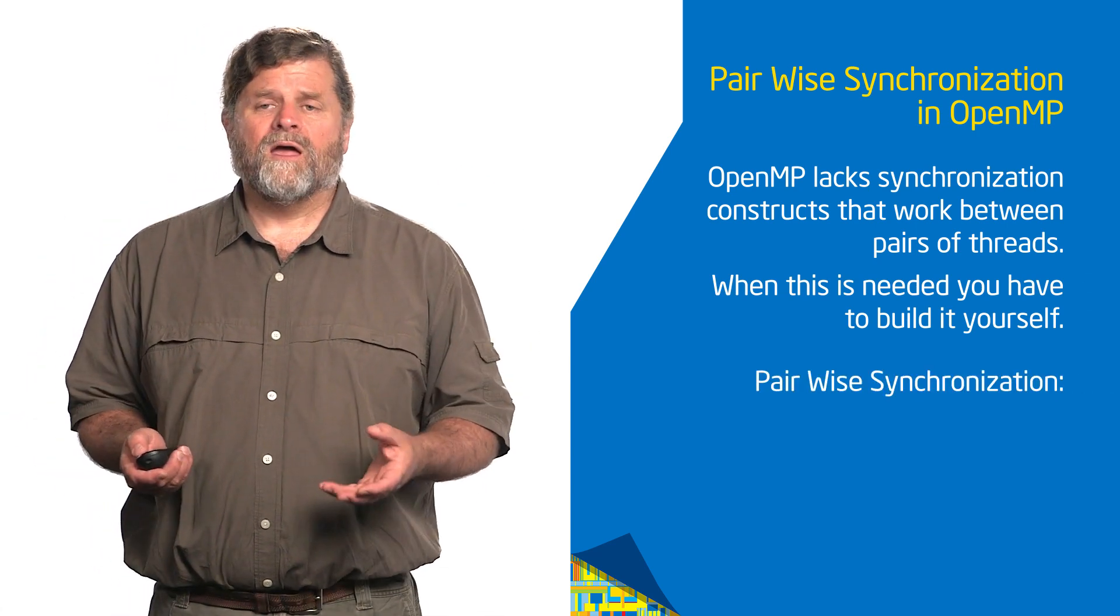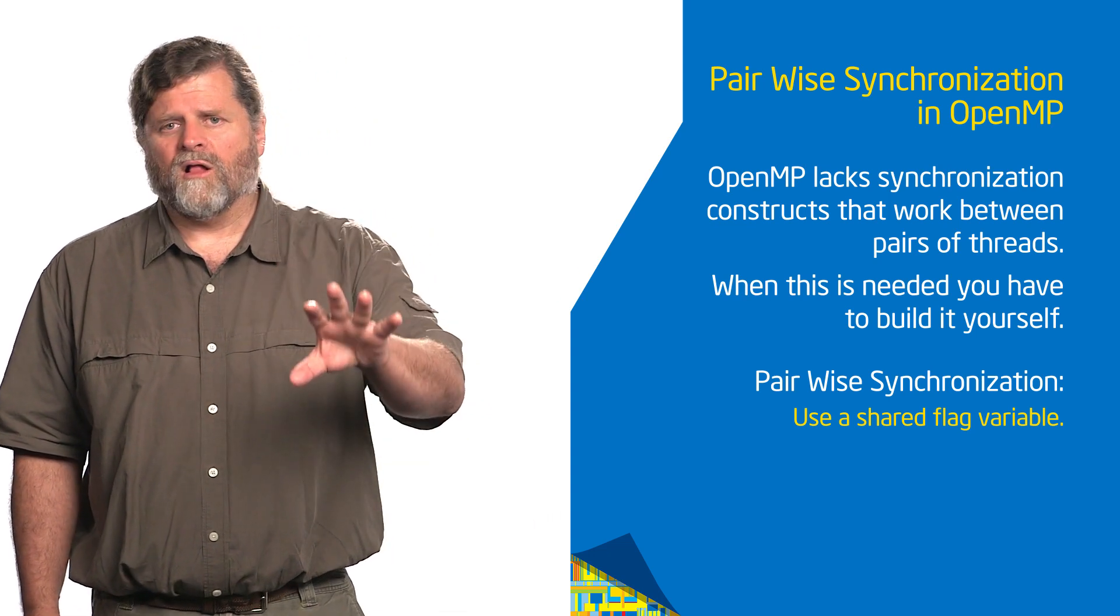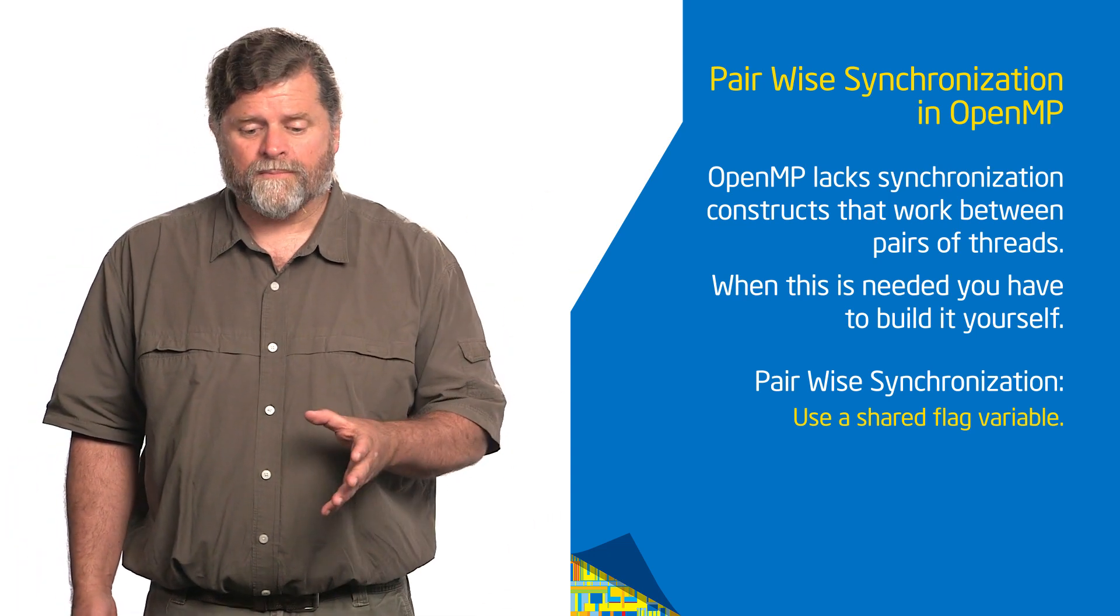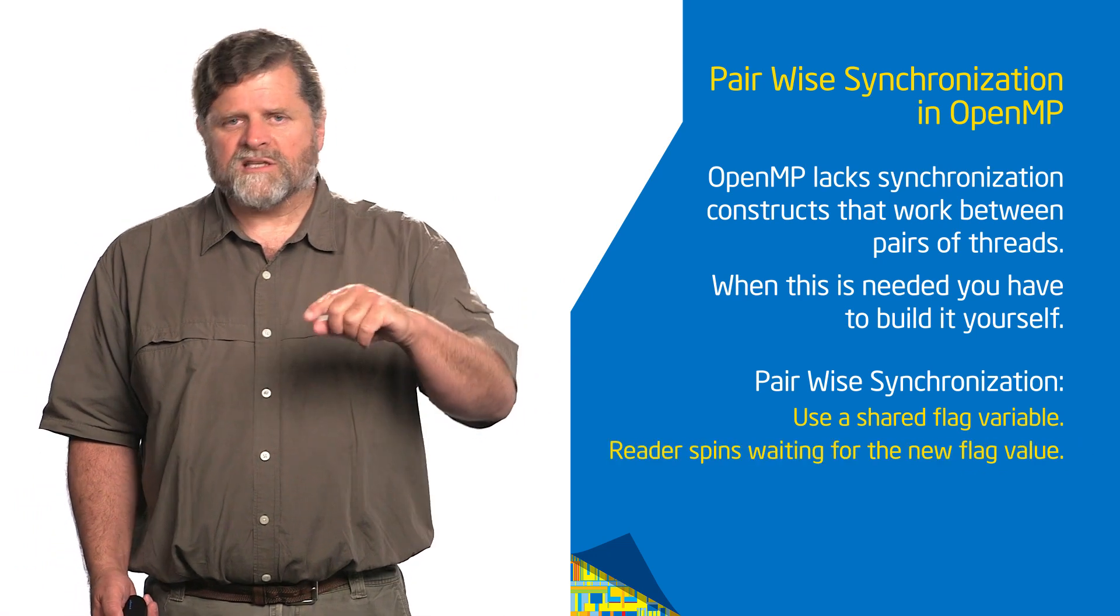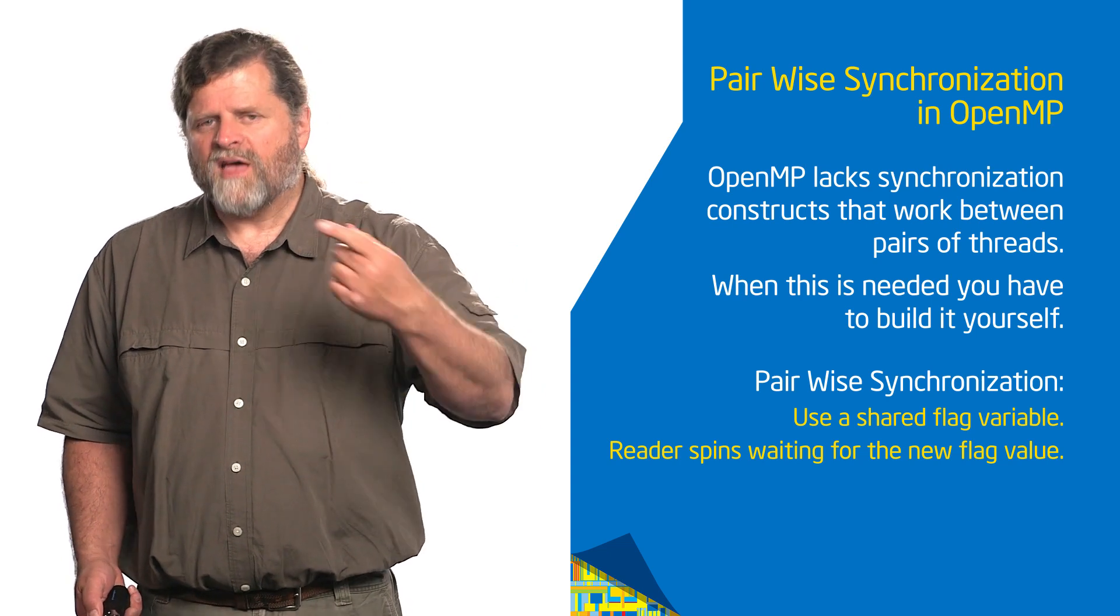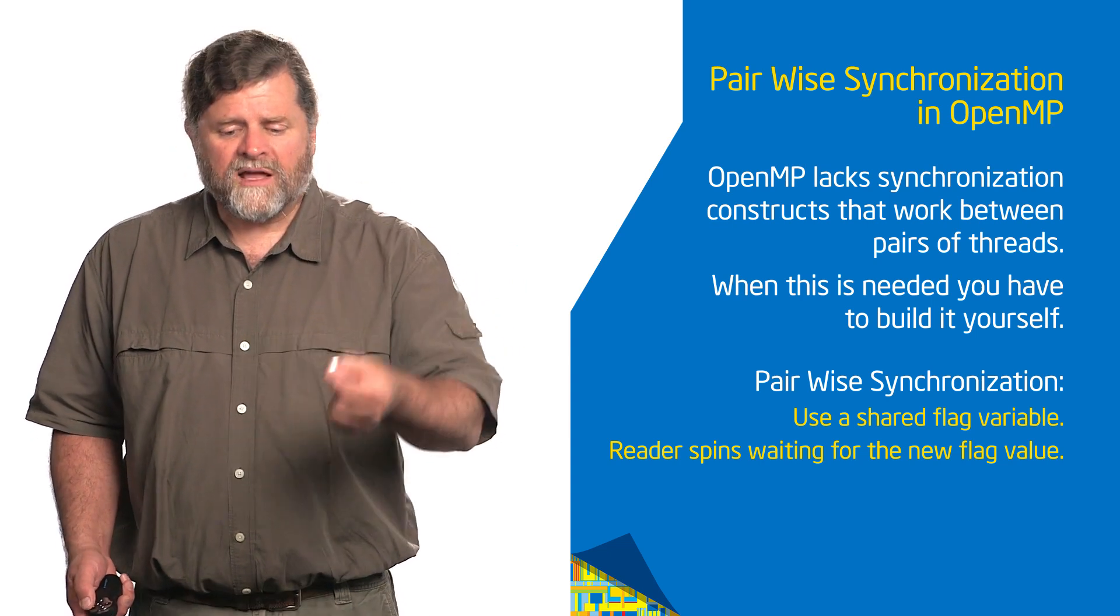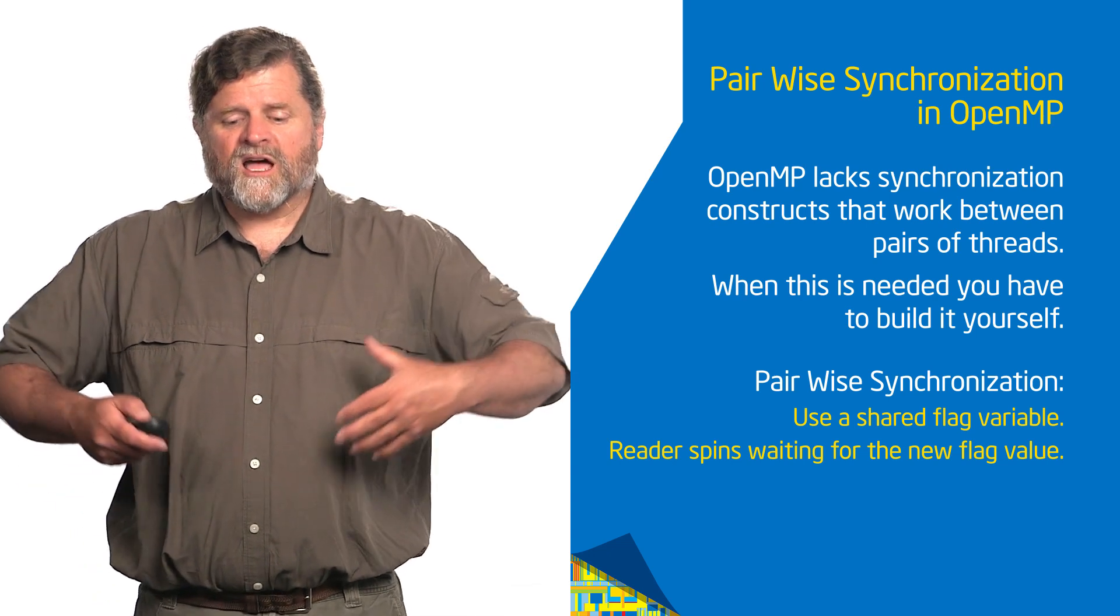So how do we do pairwise synchronization in OpenMP? I'm going to define a flag variable. So a variable, I'll even call it flag so we can keep it straight. The reader is going to do something called a spin lock. So it's going to spin, which basically means an infinite loop, checking the value of flag. And it's going to wait until the value of flag changes, and then it will know it's time to do something.